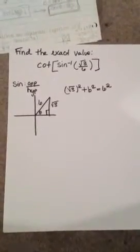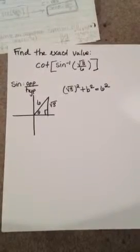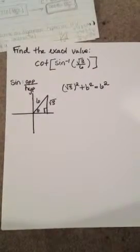Find the exact value: cotangent of sine inverse of square root of 3 over 6.